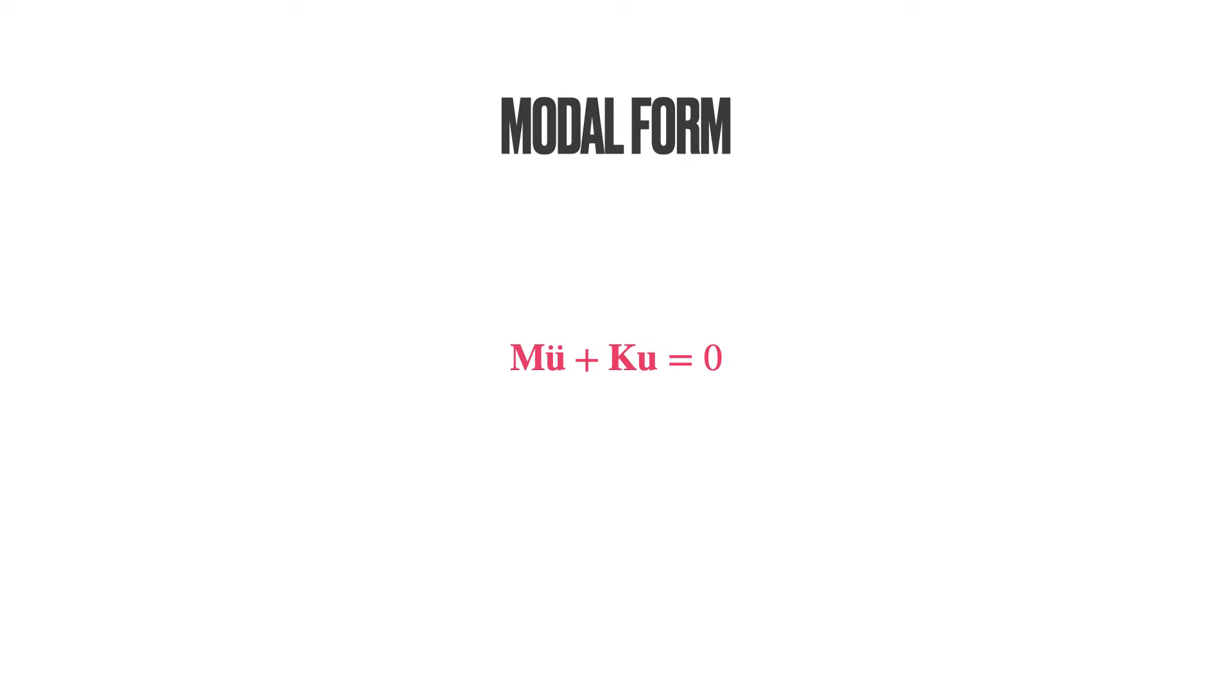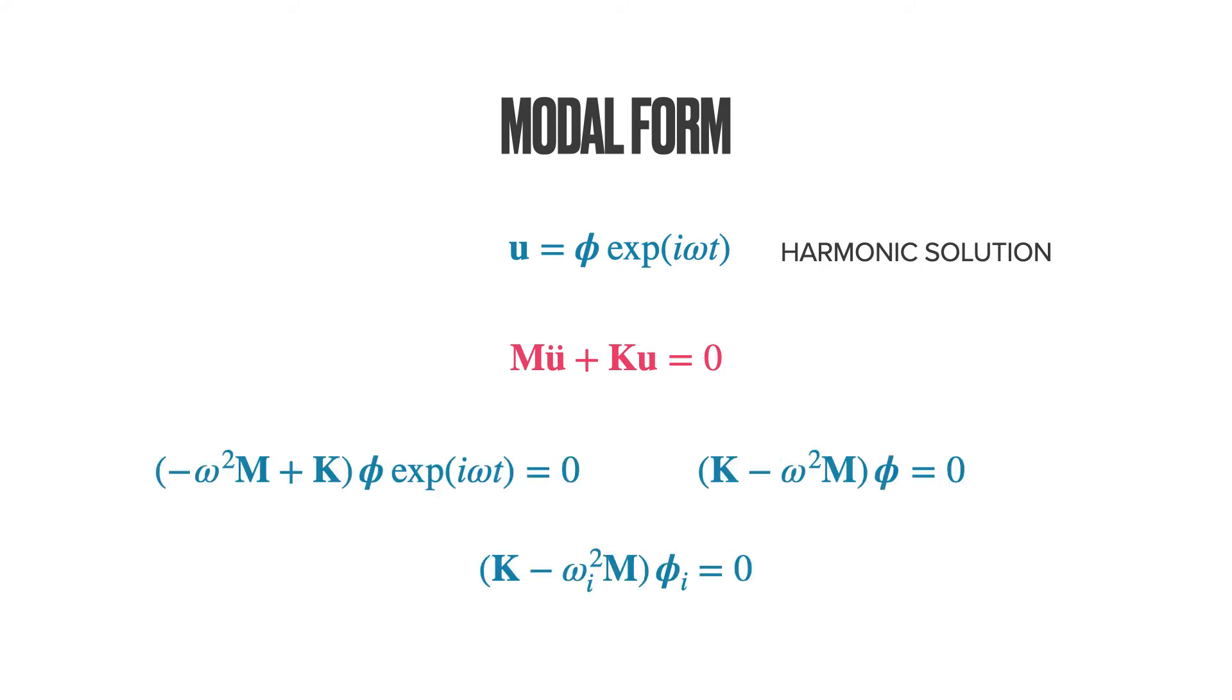Here viscous damping is neglected. Inserting the harmonic solution into the homogeneous equation and on simplification, we obtain the following expression in terms of the stiffness matrix, the mass matrix, the eigenfrequencies and the eigenforms phi.